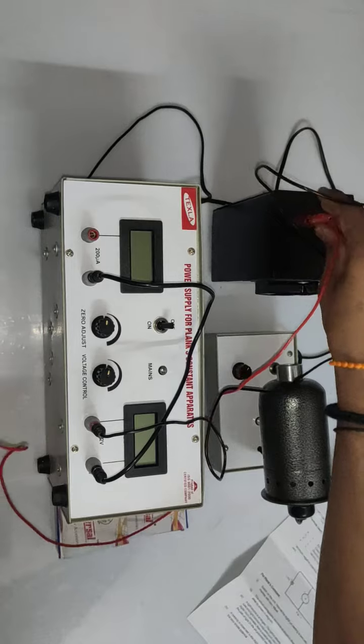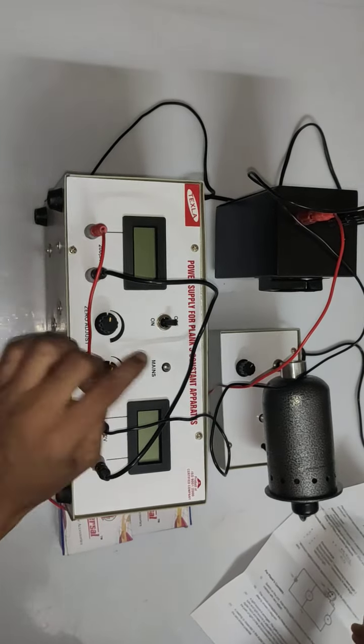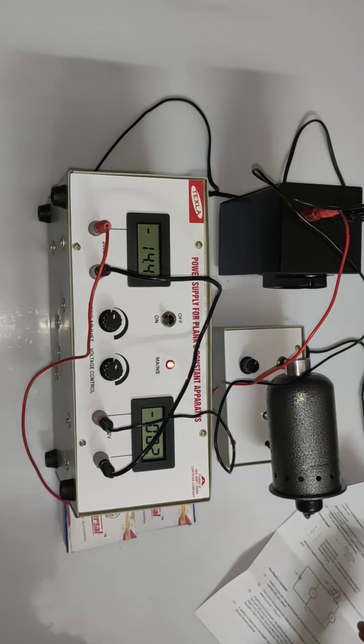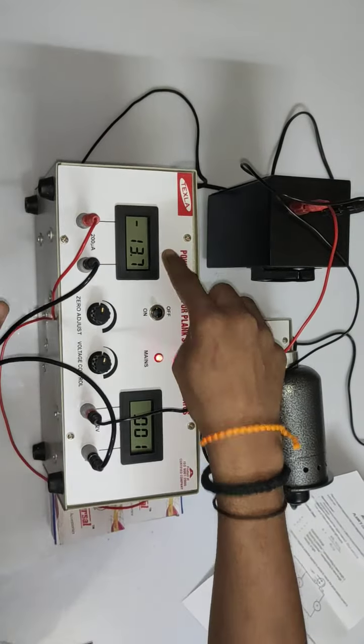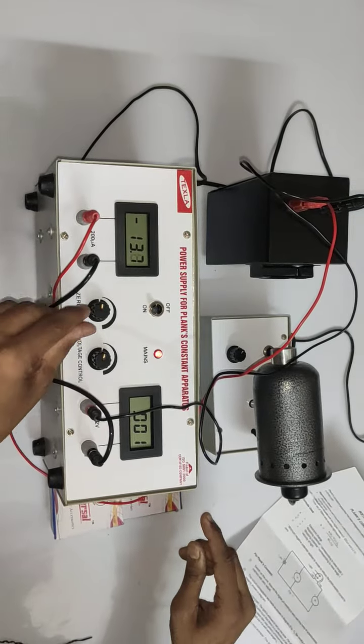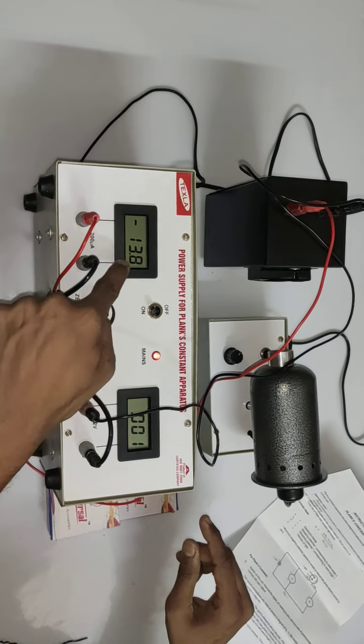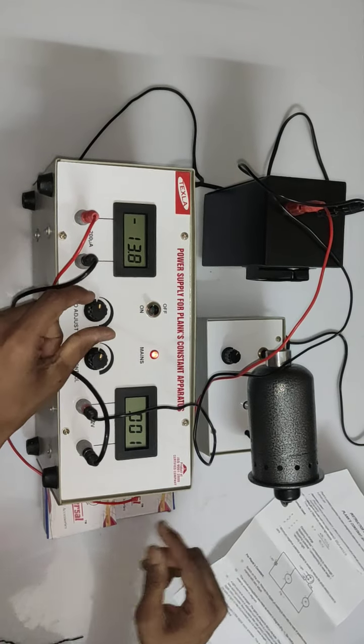Switching on the power supply. If you see, the micrometer reading is showing minus 13. With the help of zero adjustment, you have to adjust this micrometer current to zero.